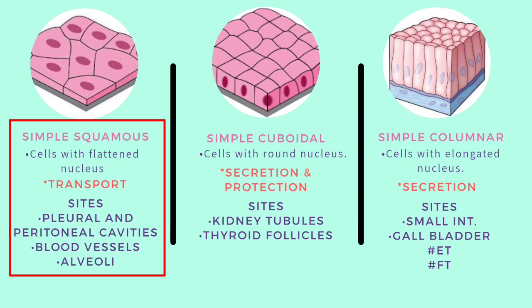Simple squamous epithelium is found in the pleural and peritoneal cavities. It is found in blood vessels — the endothelium of blood vessels is mainly formed by simple squamous epithelial tissue. It is also found in the alveoli and capillaries where the transport of gases between the blood and the air takes place.